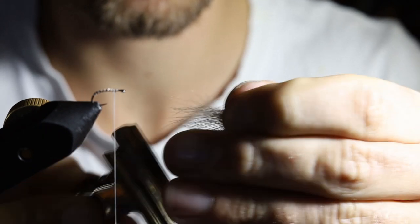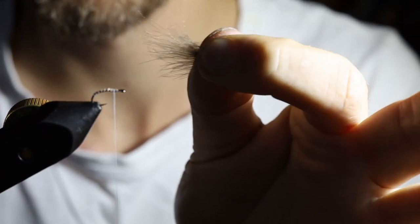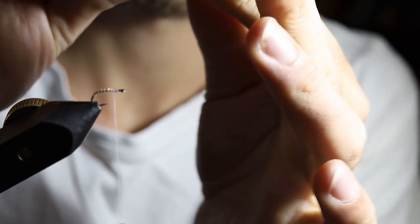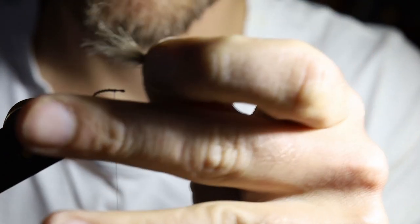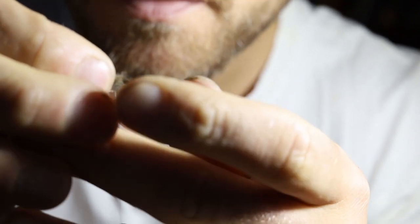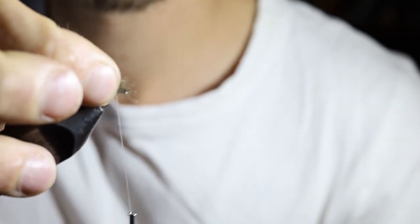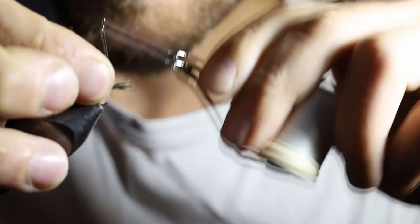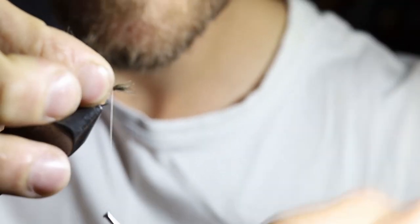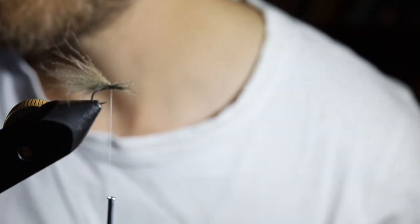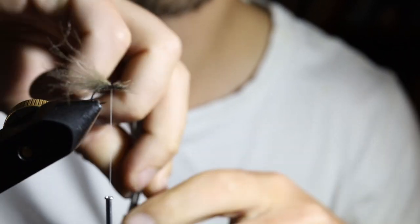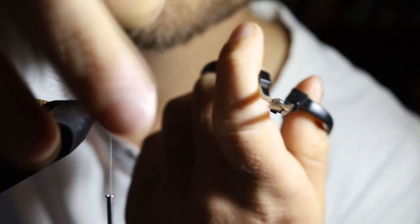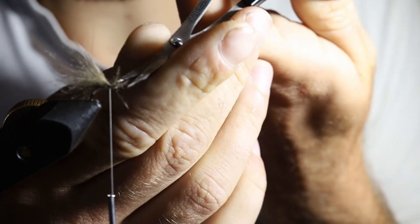Now you're going to grab them with your fingers and just tie them in like that. Now you've got a bunch of CDC fibers there. Just trim off the butts here.